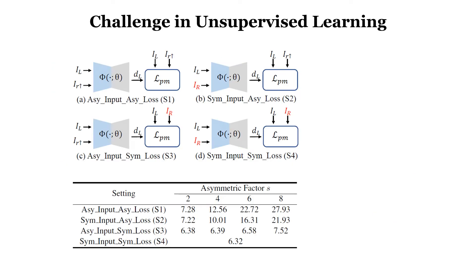We conduct a series of experiments to verify the influence of these two factors. We find that, for resolution asymmetric stereo matching, the asymmetry during loss computation has a dominant influence rather than the asymmetry of inputs.